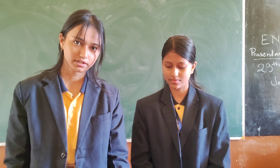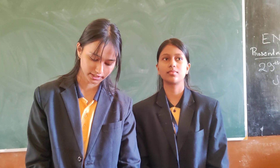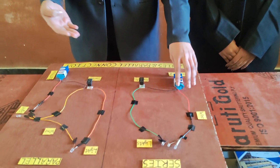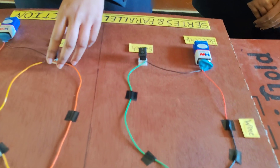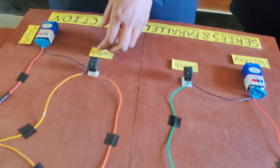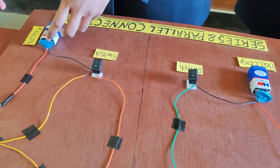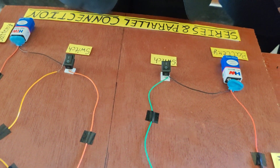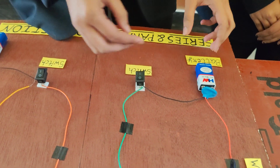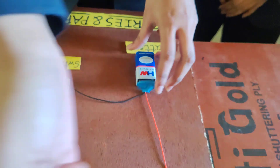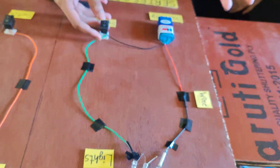Connection in series increases the voltage, and connection in parallel increases the battery bank capacity. In series connection, the same amount of current flows through all the components.